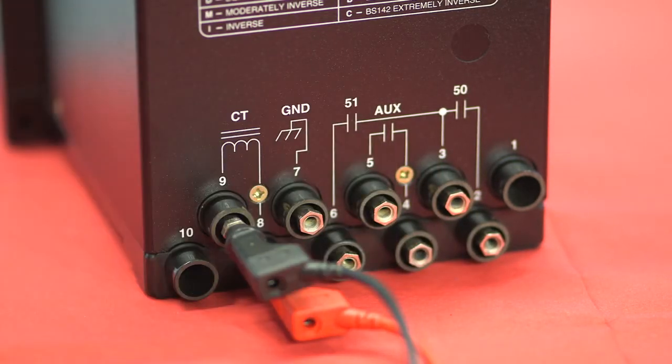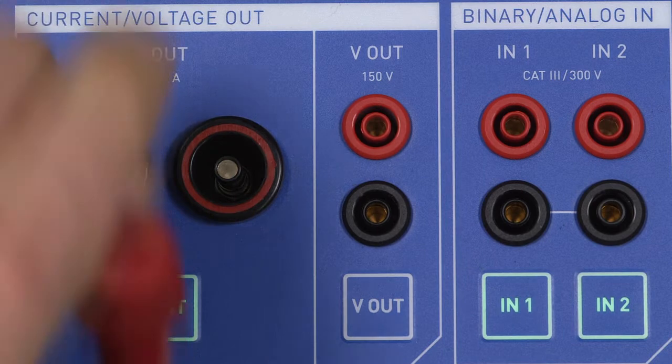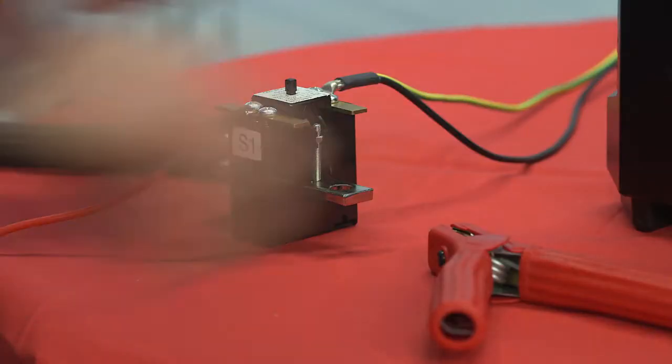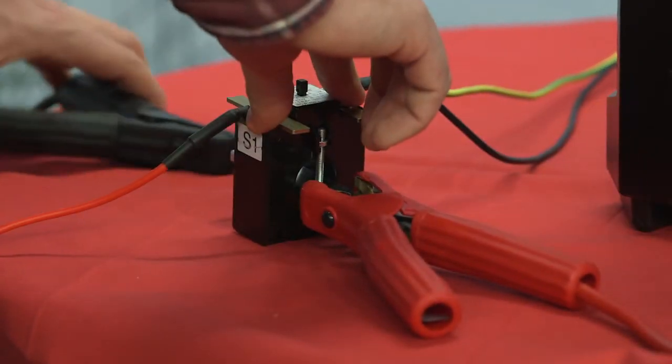During this demo, the CT in the relay will simulate part of a substation. Connect I out to the CT's primary side using the high current cables and clamps. Connect the red cable to the P1 and the black one to P2.